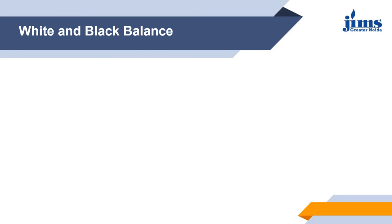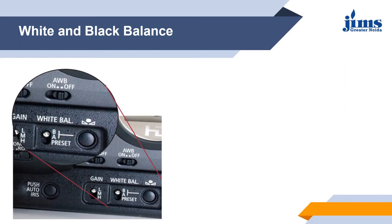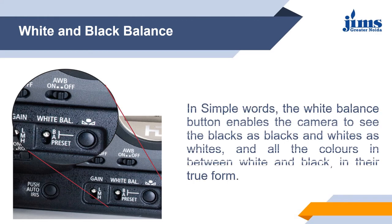Next is white and black balance. In this image we can see the white balance button. In simple words, the white balance button enables the camera to see blacks as black and whites as white, and all the other colors in between in their true form. If white balance is set properly, all colors will be recorded accurately. Otherwise, if we do not set the white balance before recording, the colors may be distorted.